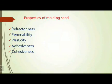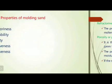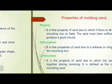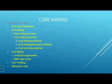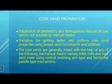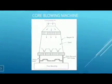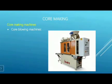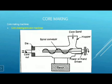The properties of molding sand already discussed are: refractoriness, permeability, plasticity, adhesiveness, and cohesiveness. Coming to core making — on screen is the core blowing machine diagram, showing the complete core making process.